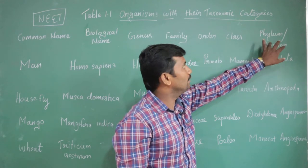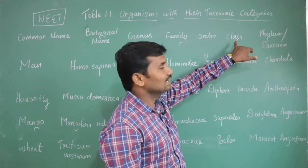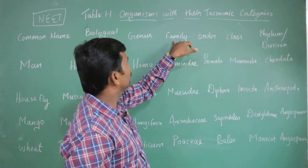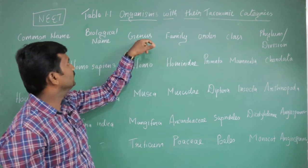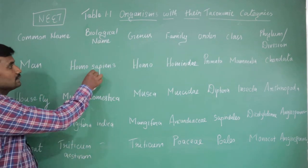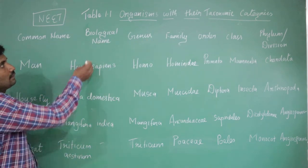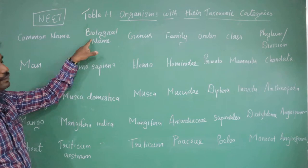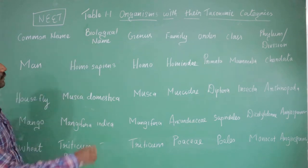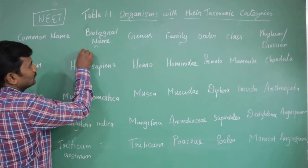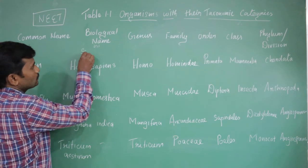The taxonomical hierarchy goes: kingdom, phylum, divisions, class, order, family, genus. Finally, the last level given is species.